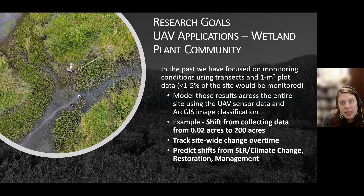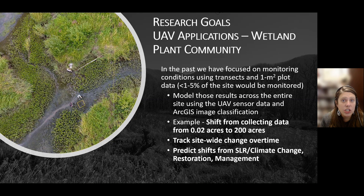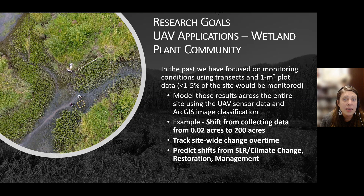For our vegetation or plant community modeling, this is such an important project because classically, with our monitoring programs, we collect only a small amount of data. We're limited by time and capacity to only spend a few days of the year at a site collecting vegetation data. We go out and collect in a representative vegetation grid with one-meter quadrats and transects, but at the end of the day, we only collect less than 1% of the acreage of a project. Being able to take that data and leverage it to map the plant community conditions across an entire project is extremely powerful.